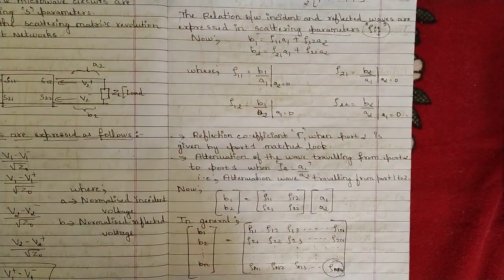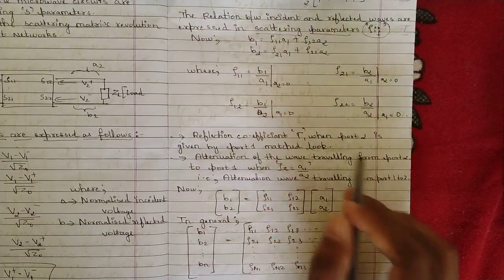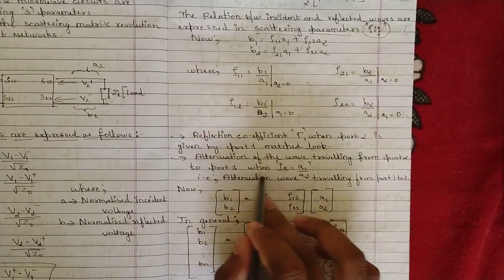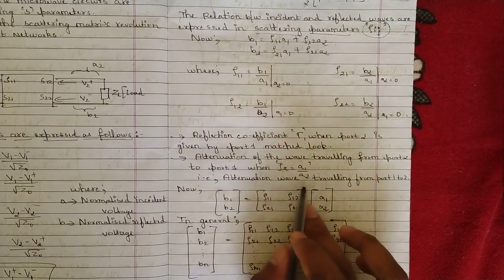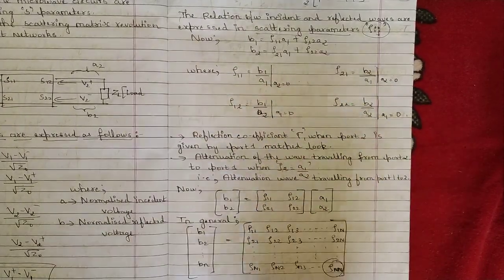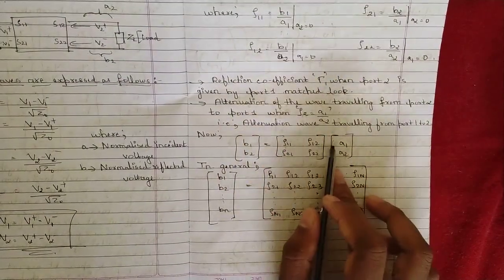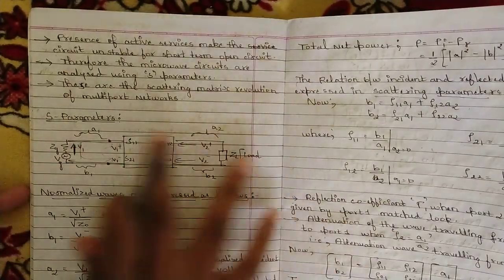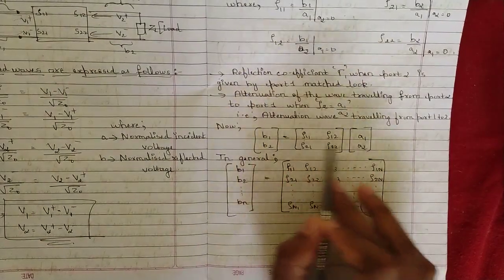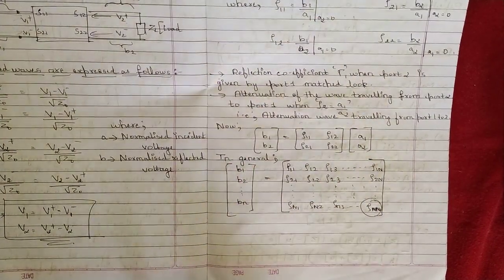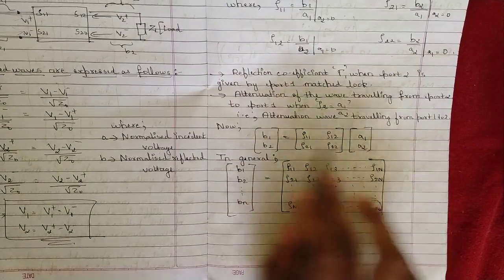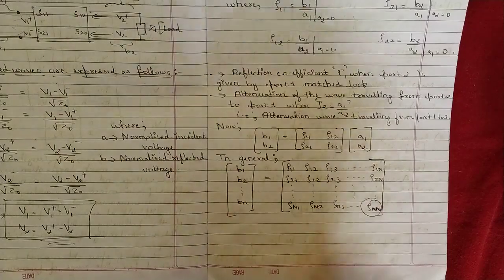ρ11 is the reflection coefficient at port 1 when port 2 is matched. ρ21 gives the attenuation of the wave traveling from port 1 to port 2. In matrix form: [b1, b2] = [ρ11 ρ12; ρ21 ρ22] × [a1, a2] — this is for the two-port network. In general, for an n-port network: [b1, b2, ..., bn] = [ρ11 ρ12 ... ρ1n; ...] × [a1, ..., an]. Please note this matrix down.